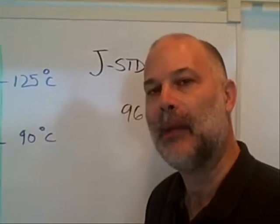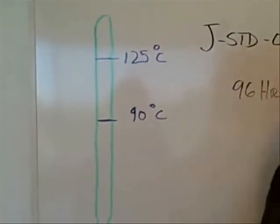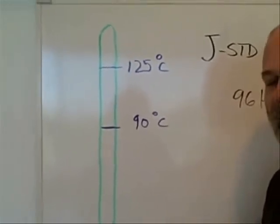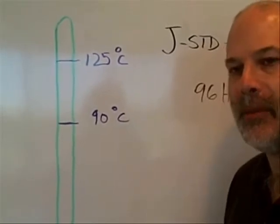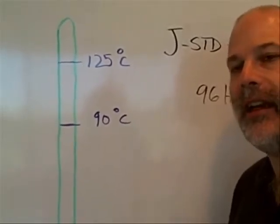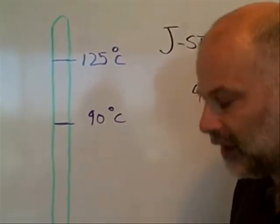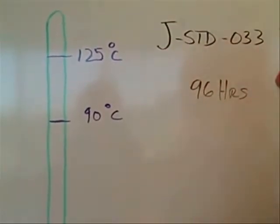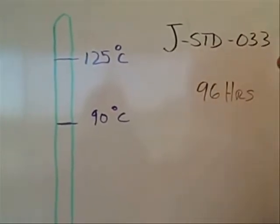J Standard 33 talks about component handling. The question was related to how often can I bake a component to eliminate the moisture, which most people are aware can cause problems with components, particularly with lead-free soldering. The standard, J Standard 33, has a paragraph 4.2.7.1, and it talks about the baking.